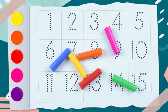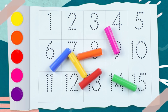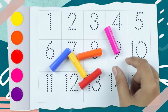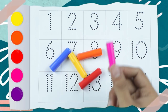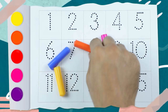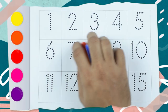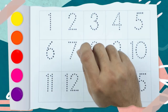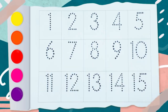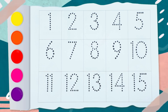Hello friends, today we learn numbers 1 to 15 with colors: green, pink, red, yellow, orange, and blue. So let's start the learning. 1, 2, 3, 4, 5, 6, 7, 8, 9.